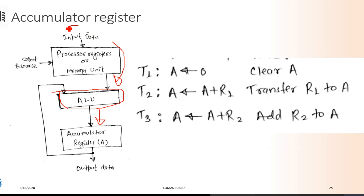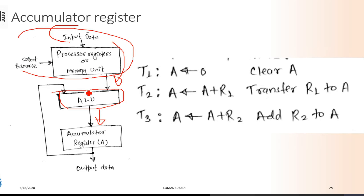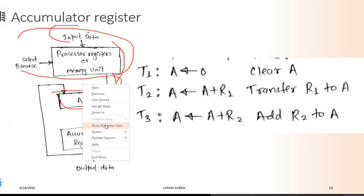In the processor register, there is the input data. There is the data input and a select source. There is the data going into ALU. There is also a part and the input external going into the accumulator.